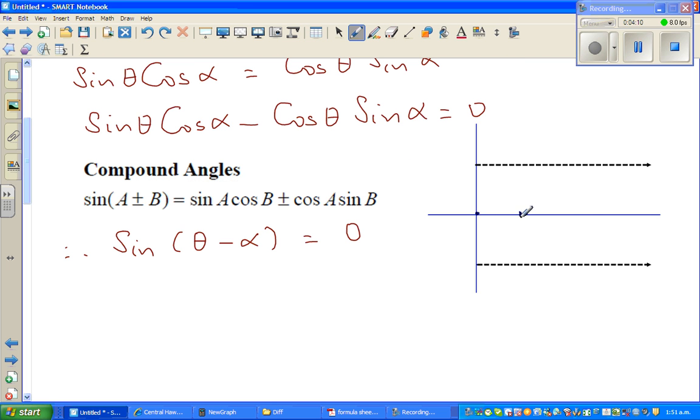So this is 0, π by 2, π, 3π by 2, and 2π. This is 2π, this is π. If you draw the sin curve, sin starts at 0, reaches the maximum at π by 2.